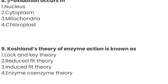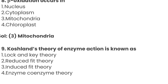Question number 8: beta-oxidation occurs in? Option 1: Nucleus, Option 2: Cytoplasm, Option 3: Mitochondria, Option 4: Chloroplast. The correct answer is Option 3: Mitochondria.